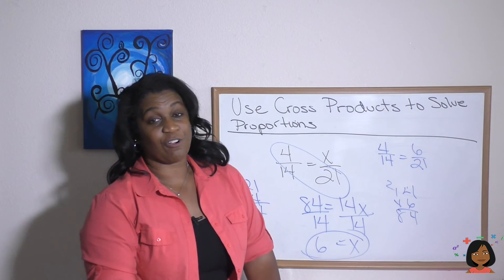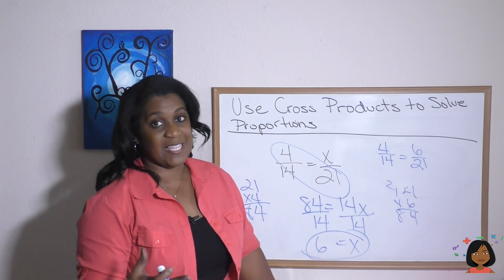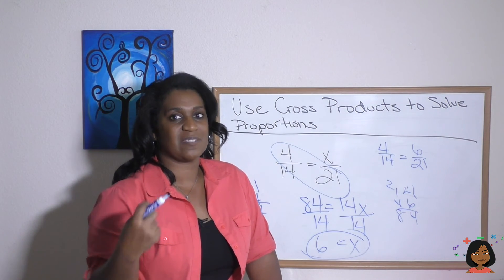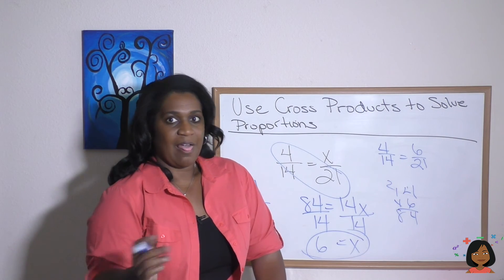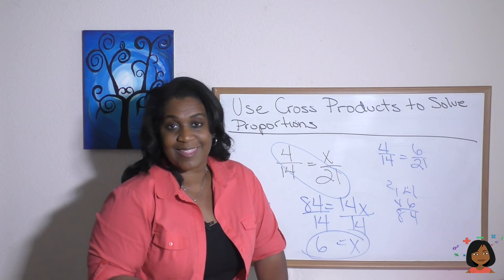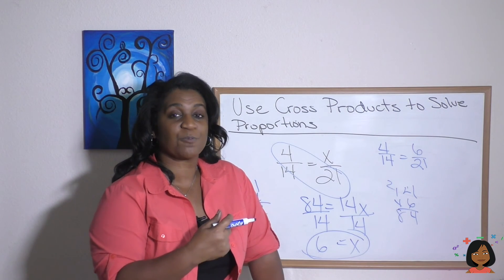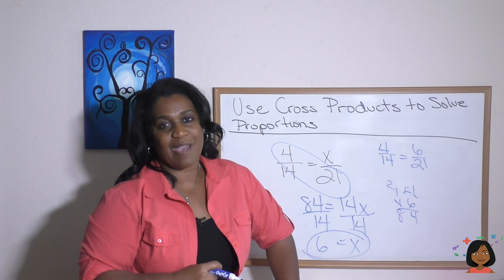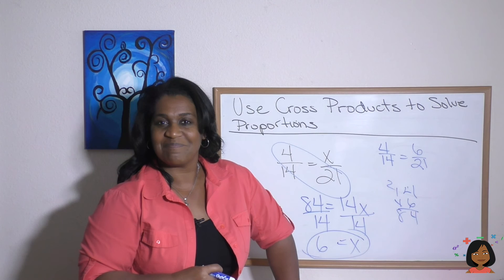That's it. Cross products or cross multiplication is the easy way to check to see if proportions are equal and to help find missing numbers and ratios. That's it for me today. It's Nicole the Math Lady. Make sure you try the practice problems to really make sure you understand this. They're on my website, NicoleTheMathLady.com. See you next time. Bye-bye.